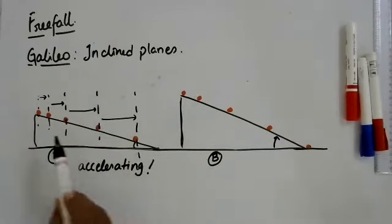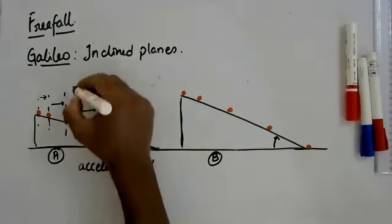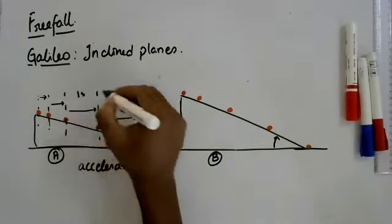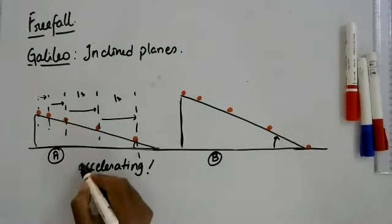And he knew that it accelerates because the distances covered by the object in the same time interval - these indicate one second time intervals - the fact that they cover greater distances in the same interval of time seem to indicate that the objects are becoming faster and faster.